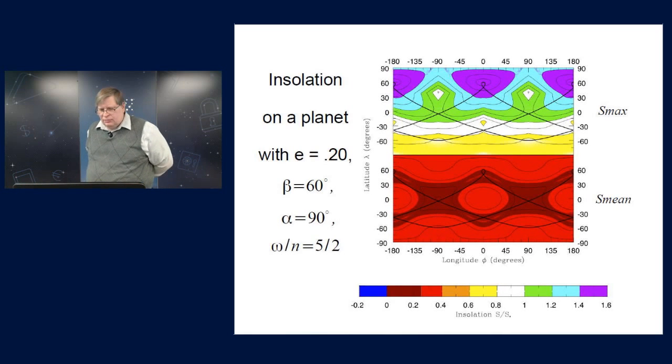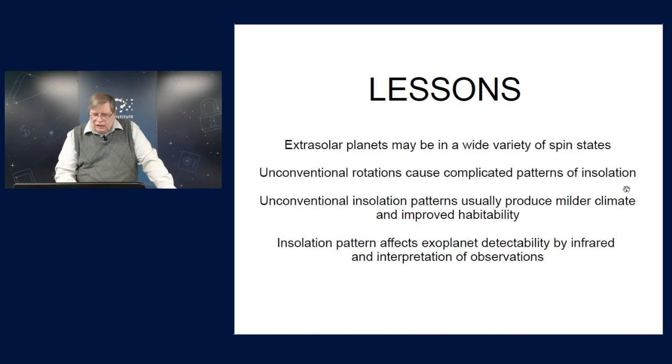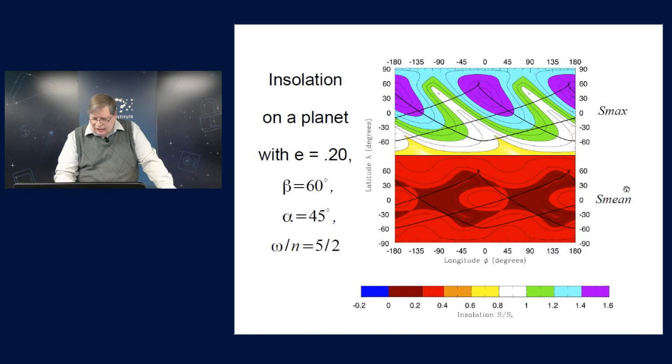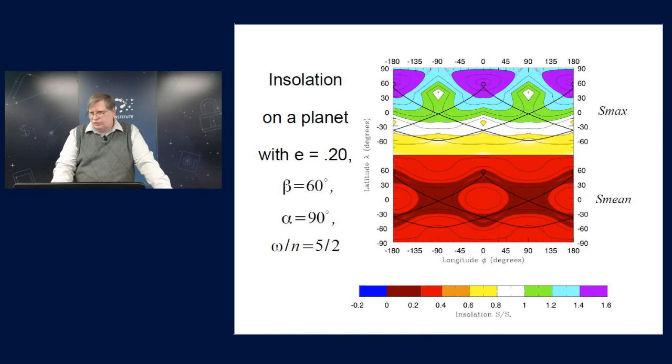So this goes to show that you can get some interesting patterns of insolation varying across the planet, but there's one more surprise in this and that's the following. If you notice this plot down here, the mean insolation looks to be symmetrical across the equator. The northern hemisphere is like the mirror image of the southern hemisphere. Notice that that is not the case for the maximum insolation and it certainly isn't the case for the sub-solar ground track.